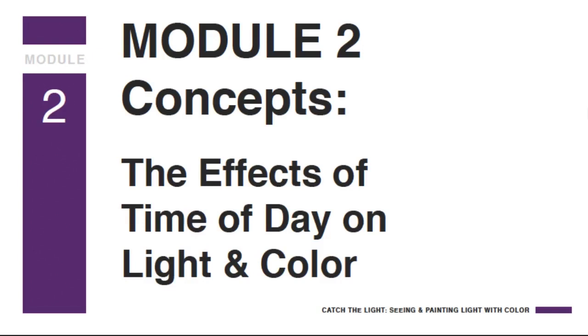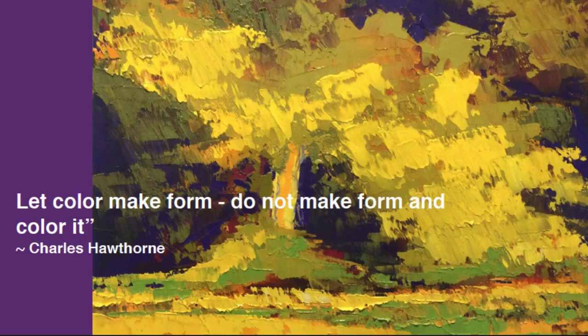Welcome to Module 2, where we're going to be talking about the effects of time of day on light and color. I want to remind you that we are trying to allow color to make form — not make form and then color it, as Charles Hawthorne said. So that means you're trying to look at the color patterns: value, hue, intensity, and temperature patterns, instead of looking at the objects.